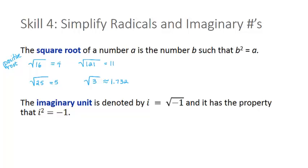What about negative numbers inside the radical? If I had the square root of negative 4, there's not a real number I can square to get negative 4. If I square 2, I get positive 4.